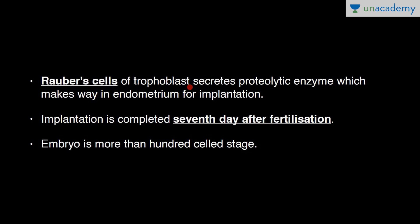Rauber cells of the trophoblast secrete proteolytic enzymes which invade the endometrium for implantation. Trophoblast cells in contact with the endometrium have Rauber cells that secrete proteolytic enzymes to prepare the endometrium for implantation. Implantation is completed on the 7th day after fertilization — so implantation starts at day 6 and is completed at day 7. The embryo at this stage is more than 100 cells.